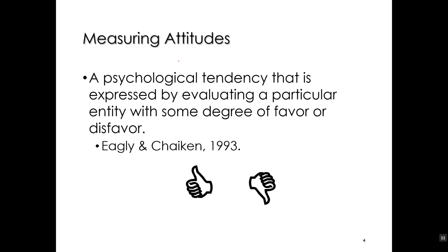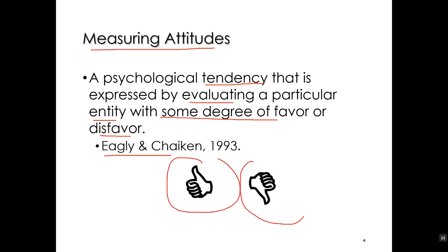Let's talk about how we go about measuring attitudes. While Allport had a very good and interesting definition, Eagly and Chaiken in 1993 came up with a really good modern definition. Attitudes are the psychological tendency — that is, a psychological desire or something that we often do — where we evaluate some entity with some degree of favor or disfavor. By favor or disfavor, they literally mean positive or negative, thumbs up or thumbs down.